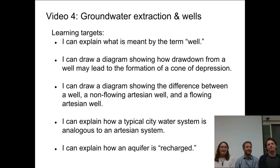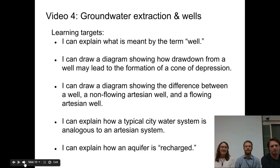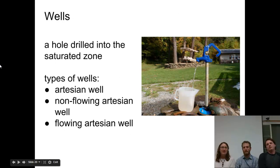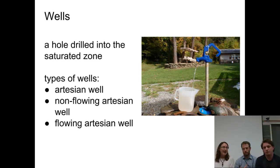We're back with video number four. It looks like we're talking about groundwater — pulling it out of the ground through wells. Make sure to pause, check out the learning targets, get ready to take your notes, and let's start. We're going to talk about three kinds of wells: an artesian well, a non-flowing artesian well, and a flowing artesian well, and the different situations those wells occur under.